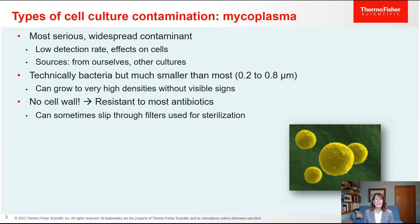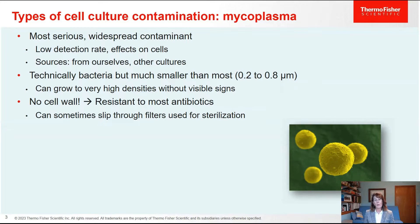The next type of contamination is mycoplasmas. These are the most serious and widespread contaminants in our cultures because they're not detected very well. It's very common that people are not aware that they have a mycoplasma contamination, and also because of their negative effects on cultured cells. Mycoplasmas come from us, from other cultures — there are more than 100 different species. It's very common to get a mycoplasma contamination from cross-contaminating from another culture, or from a culture received from a collaborator.